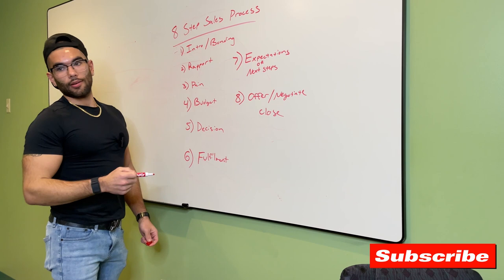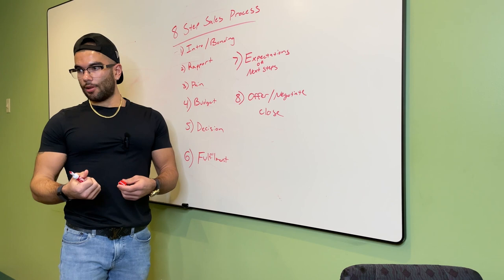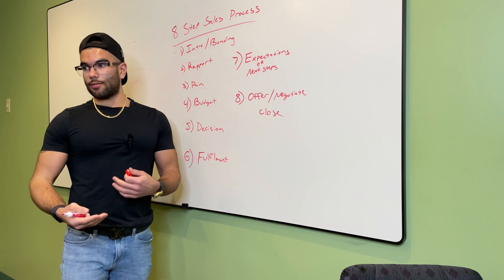The beginning is intro and bonding, which is introducing yourself and letting them know who you are. Bond with them a little bit, try to get them to smile in the first five to fifteen seconds, say a little joke or whatever. This is your swag. Nobody can teach you this. This is your own swag. You got to be your own person.